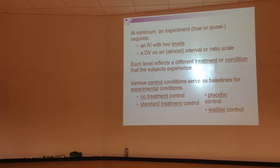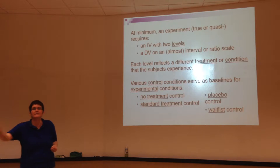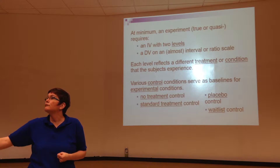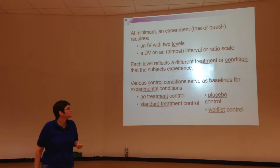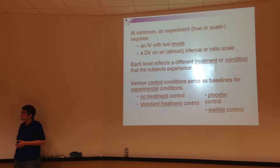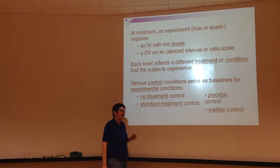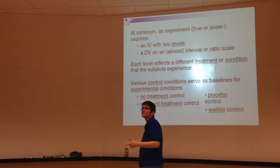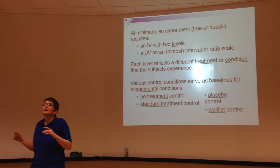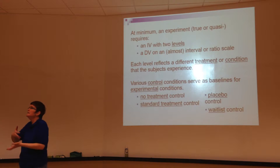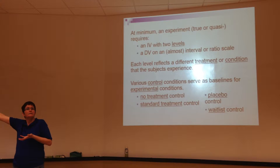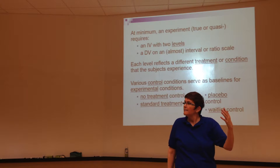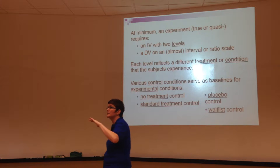That's why I can never make a causal claim saying speaking two languages causes people to read a certain way — there are so many other things that could be guiding how they read besides the number of languages they speak. When we do an experiment, at minimum we need an independent variable and a dependent variable. The independent variable must have at least two levels. The dependent variable will typically have many more levels, because it's usually measured on an interval or ratio scale.